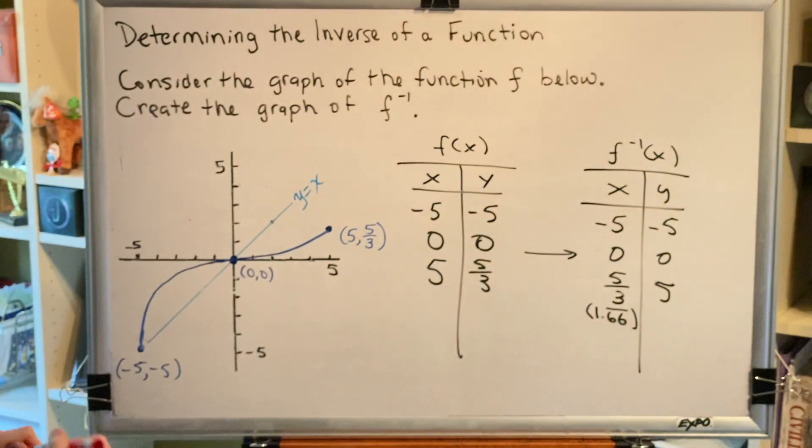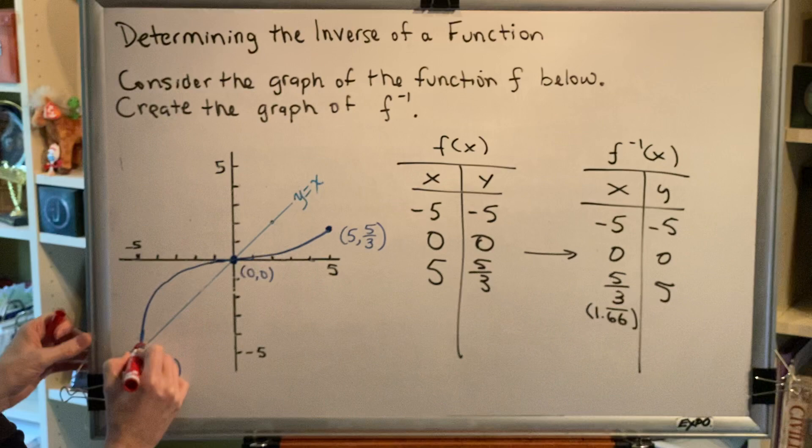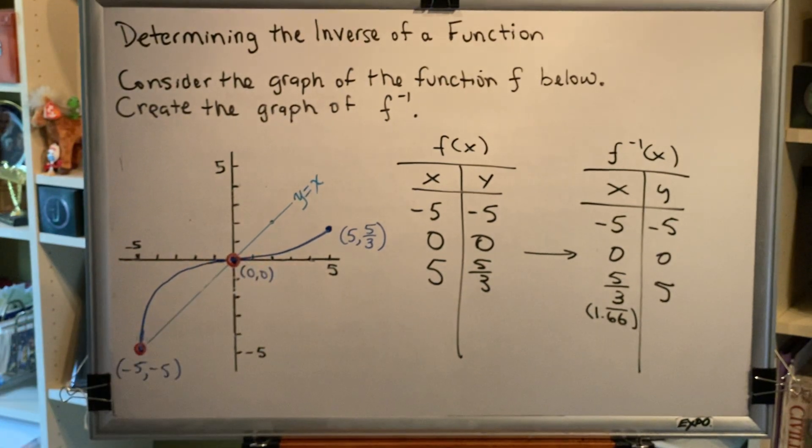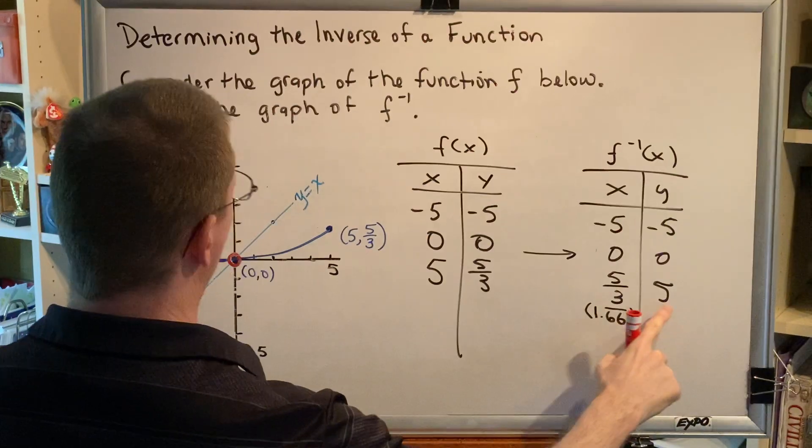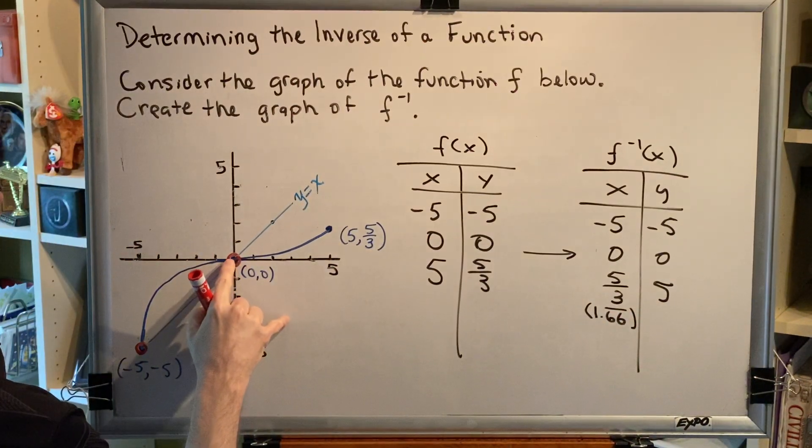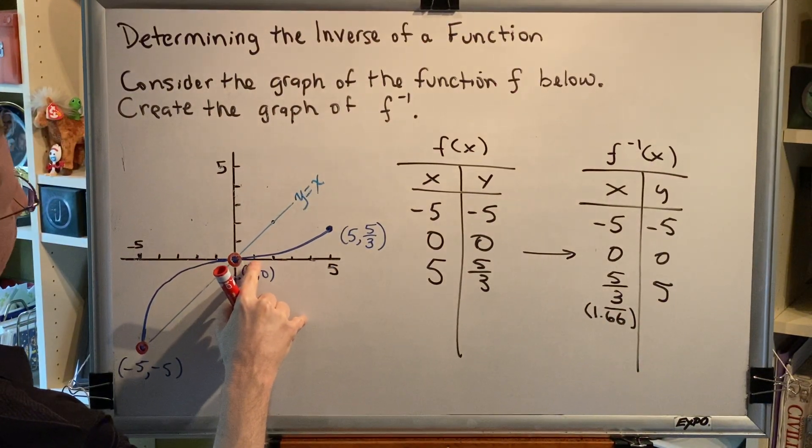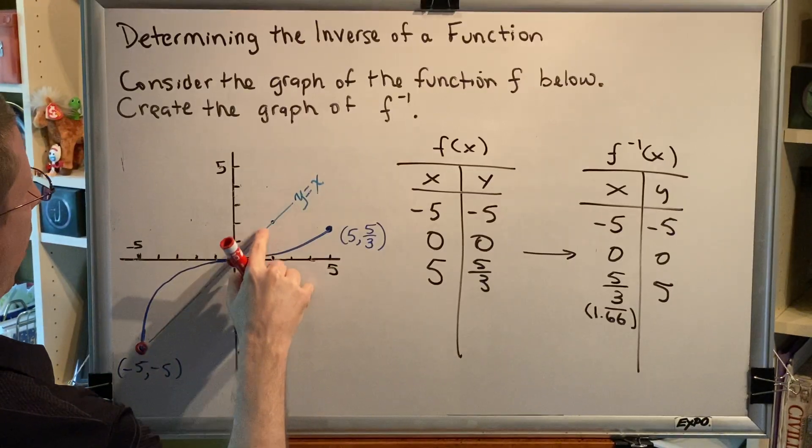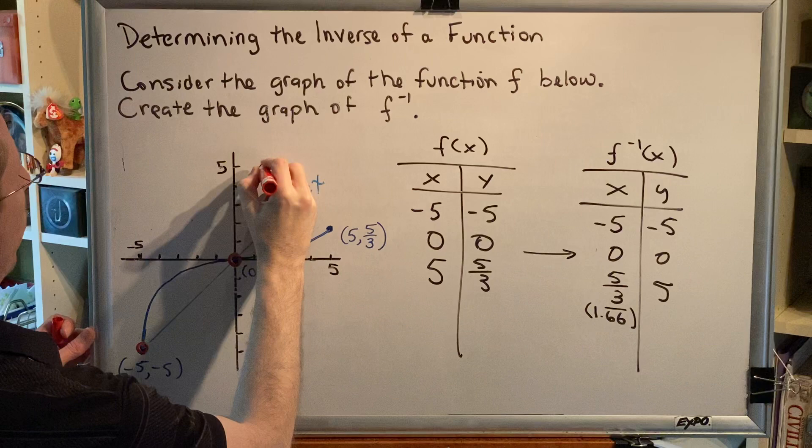Let's plot our points. We've got negative 5, negative 5, which is here. We've got the origin, 0, 0, which is here. And then we've got 1.67, 5. So if we start at the origin, go 1, and then a little bit more to about 1.7, and then up 5, we get this point right here.